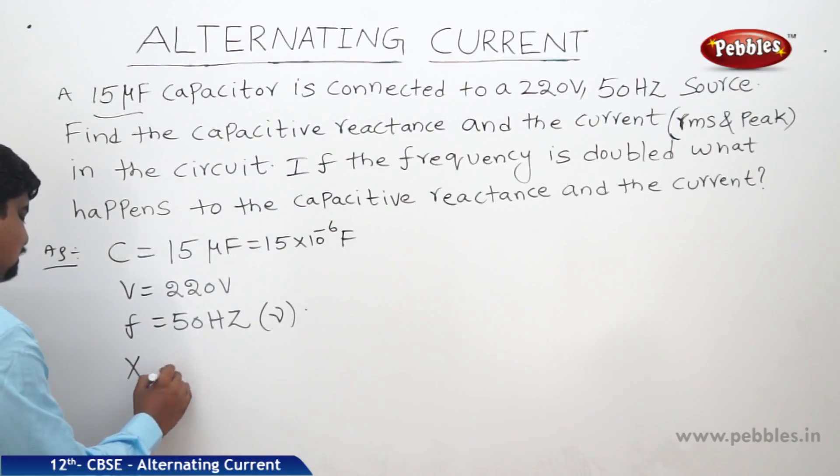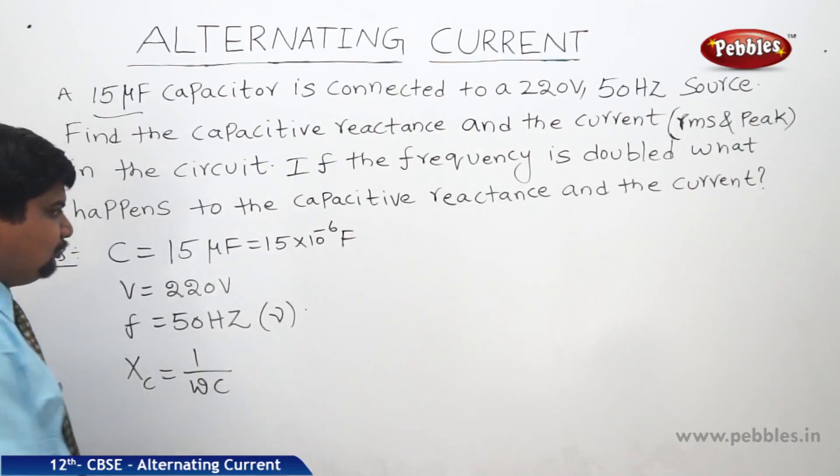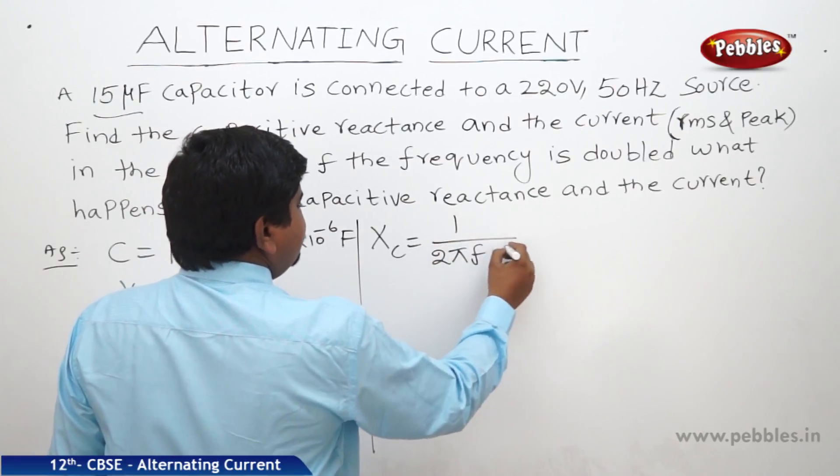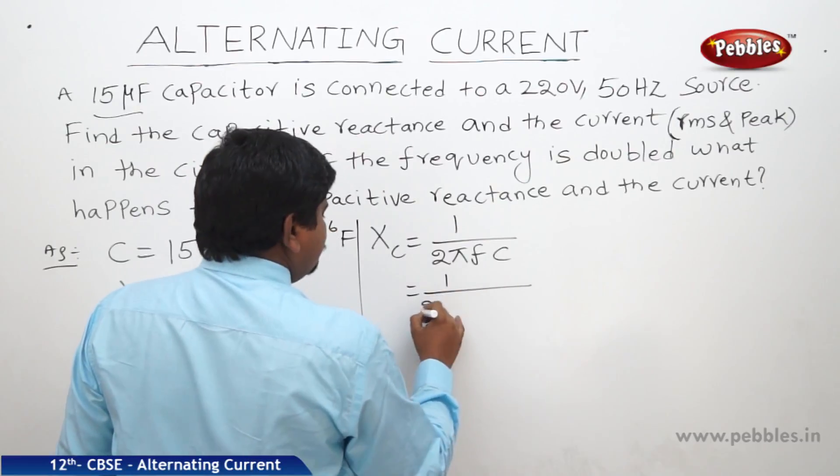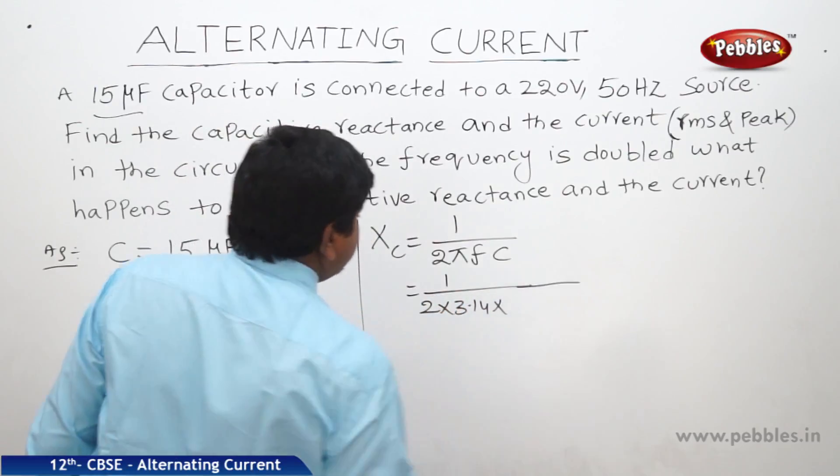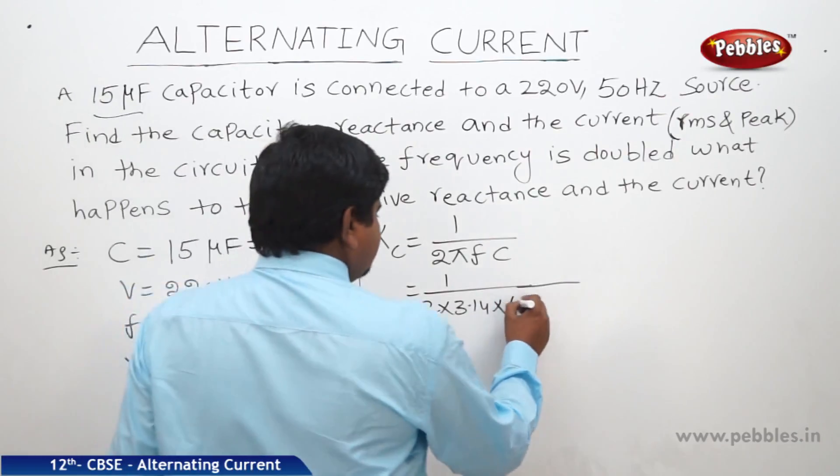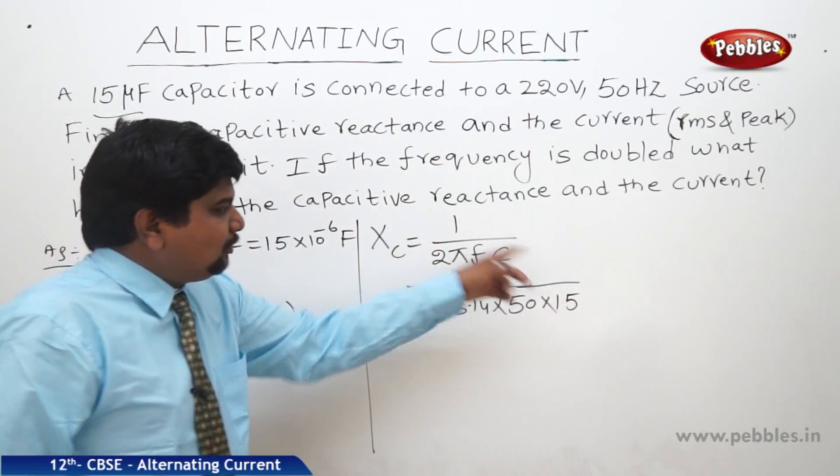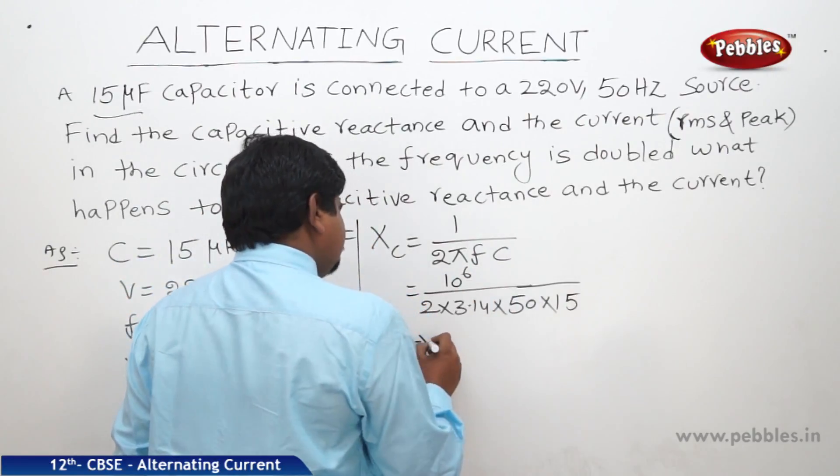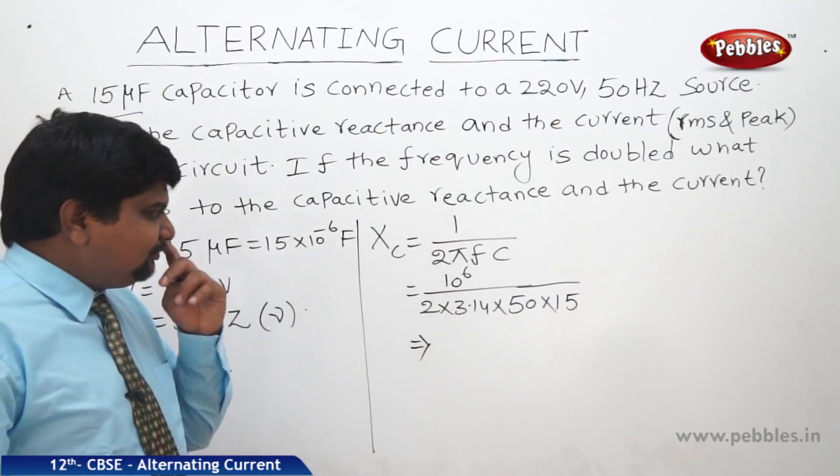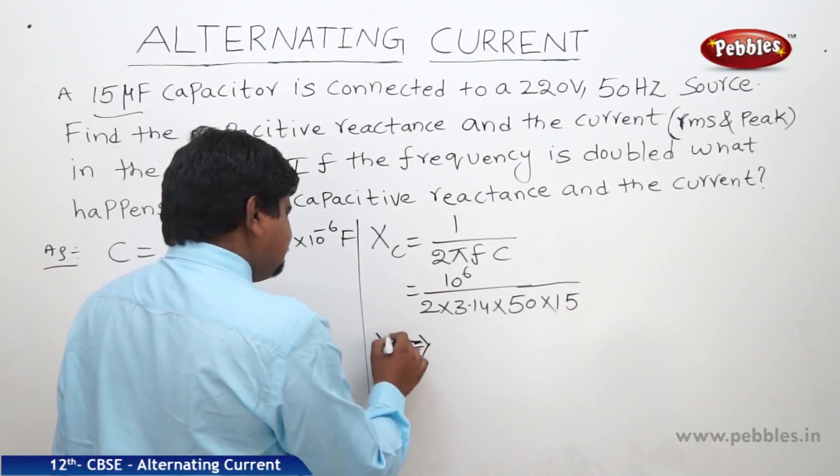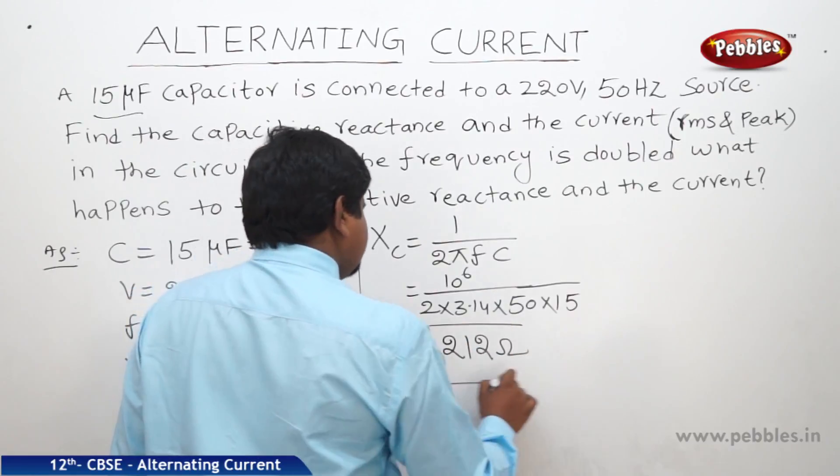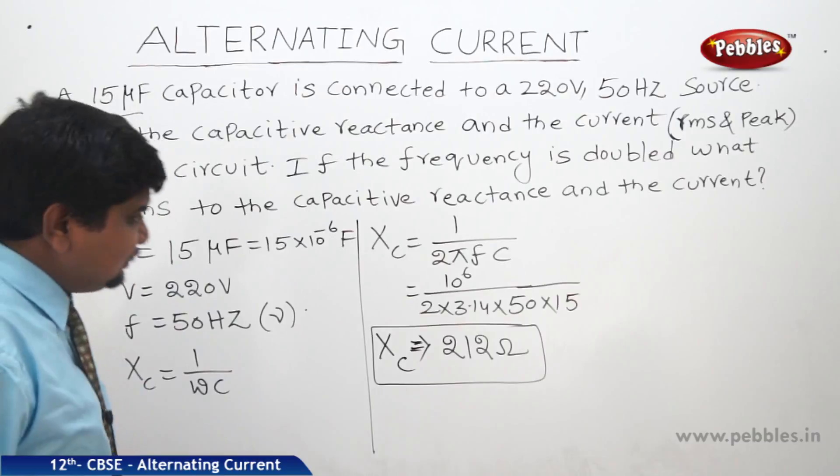Now we should find out the capacitive reactance. What is the expression for capacitive reactance? XC equals 1 by ωC, where XC equals 1 by 2πfC. Therefore, 1 by 2 into π is 3.14, frequency is 50 hertz, capacitance is 15 microfarad. After solution, we will get XC equals 212 ohms. This is the capacitive reactance.